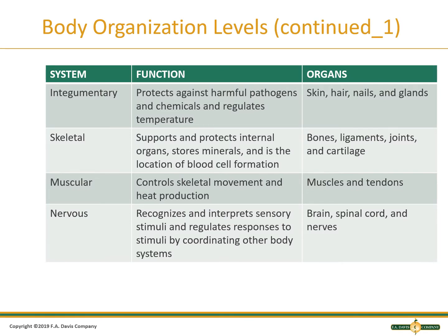The integumentary system functions to protect against harmful pathogens and chemicals and regulate temperature. Its organs are the skin, hair, nails, and glands. The skeletal system supports and protects internal organs, stores minerals, and is the location of blood cell formation. Its organs are bones, ligaments, joints, and cartilage. The muscular system controls skeletal movement and heat production, and its organs are muscles and tendons.